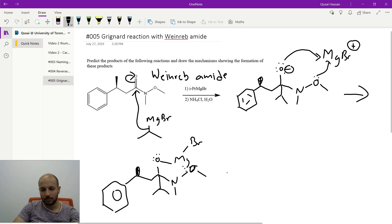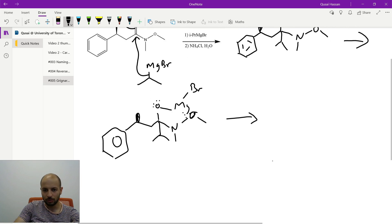So that's the end of the first step. This is actually a really stable complex at low temperatures. So what we're going to do next is we're going to add that acidic solution, which is just ammonium chloride in water, which means we're going to have these hydronium ions here.